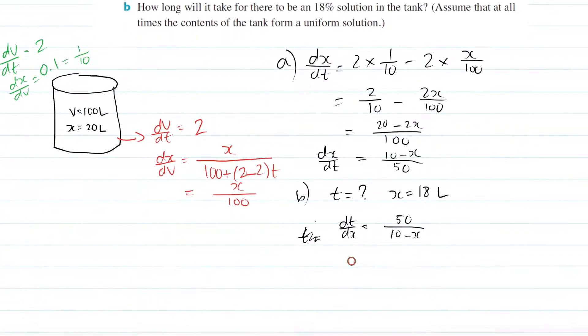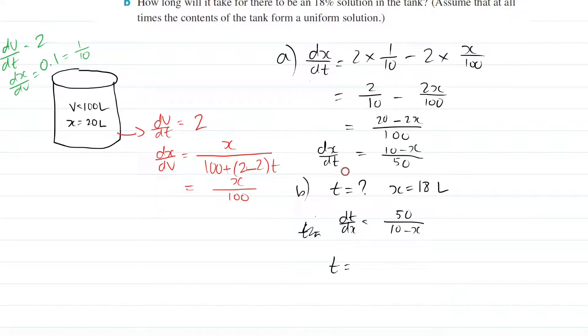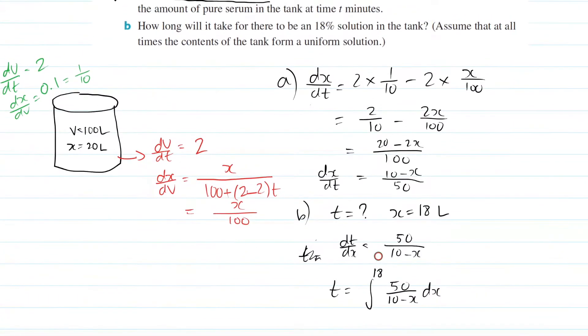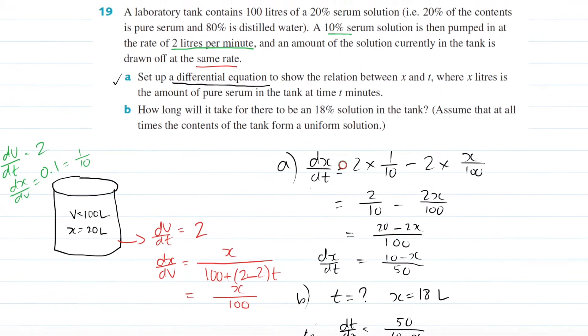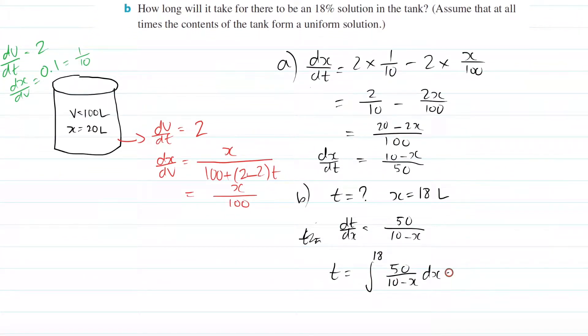And then you can use a definite integral. So t equals, you integrate 50 over 10 minus x in terms of x. And here's the clever bit: you want 18 liters, right? So you put 18 up top right there. And then what you can do here, guys, is that initially, so at t equals 0, remember definite integral, just check back that video you'll see it. T equals 0, there is 20% serum solution.